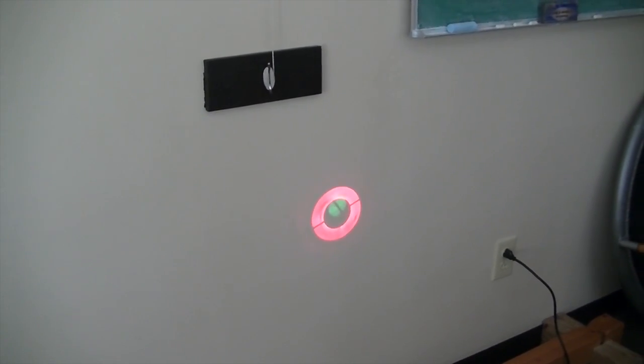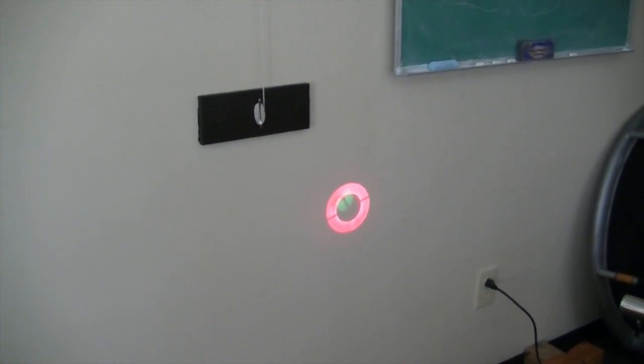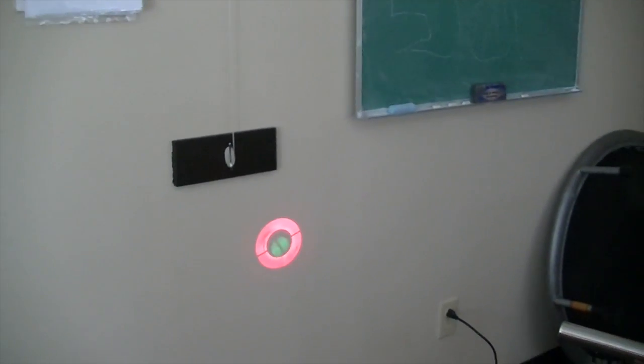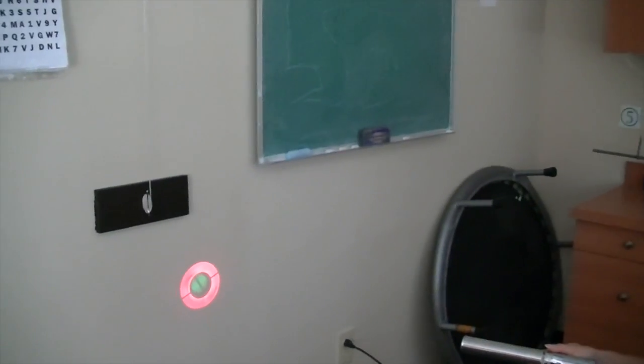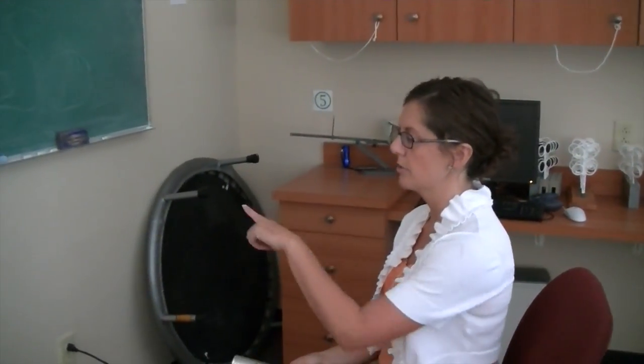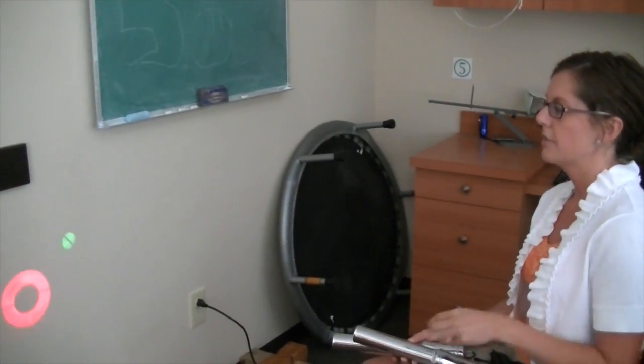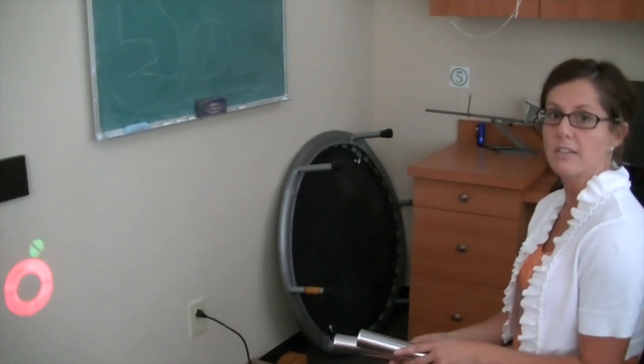We also use this for kids who have lazy eye or amblyopia, and for patients who have strabismus or an eye turn. If they're ignoring or suppressing an eye, we want them to have the glasses on. They have to see both images, one with each eye. If they're not paying attention to both eyes, it cancels out on the wall for them, and they can't see what they're doing.